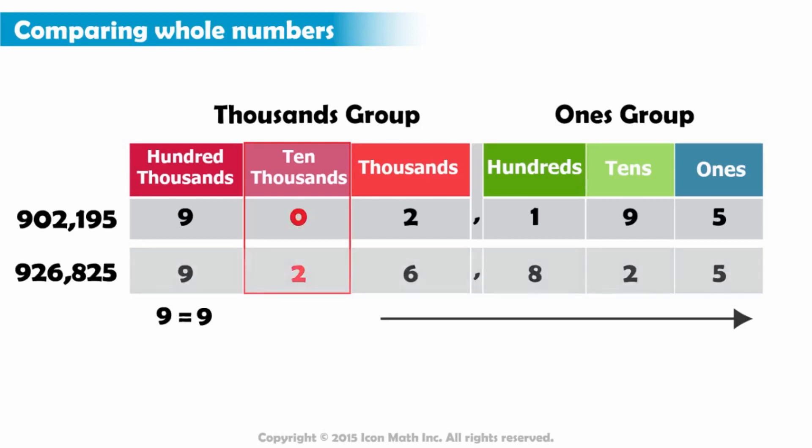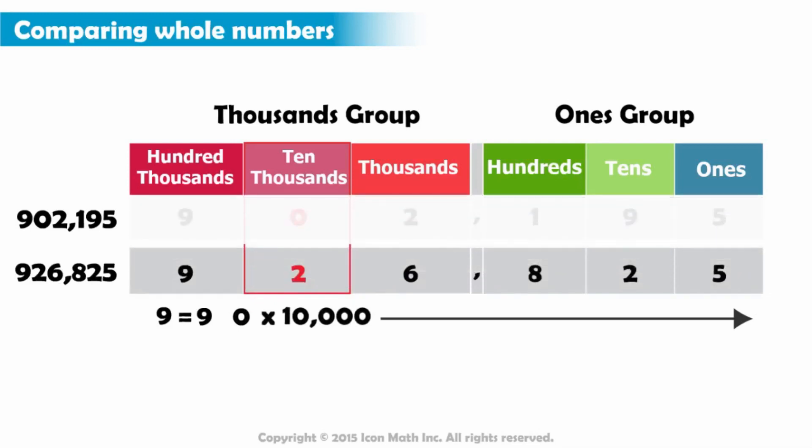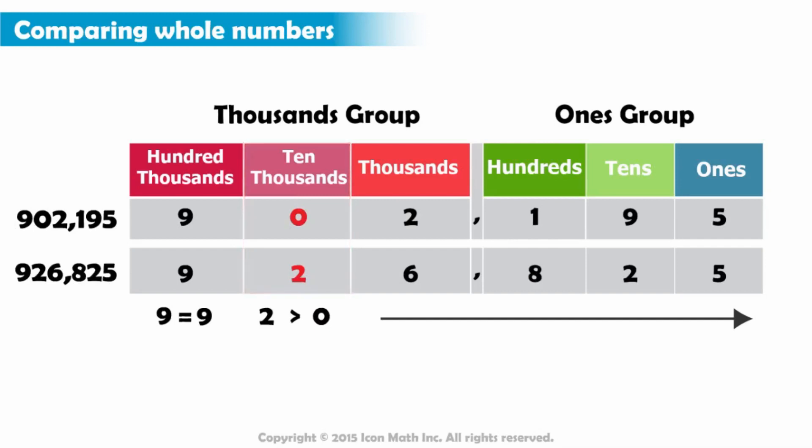This means that the first number has zero tens of thousands, while the second number has two ten thousands, or twenty thousands. Since the value that two represents is larger than the value that zero represents in the same place, we can tell that the second number is greater than the first number.